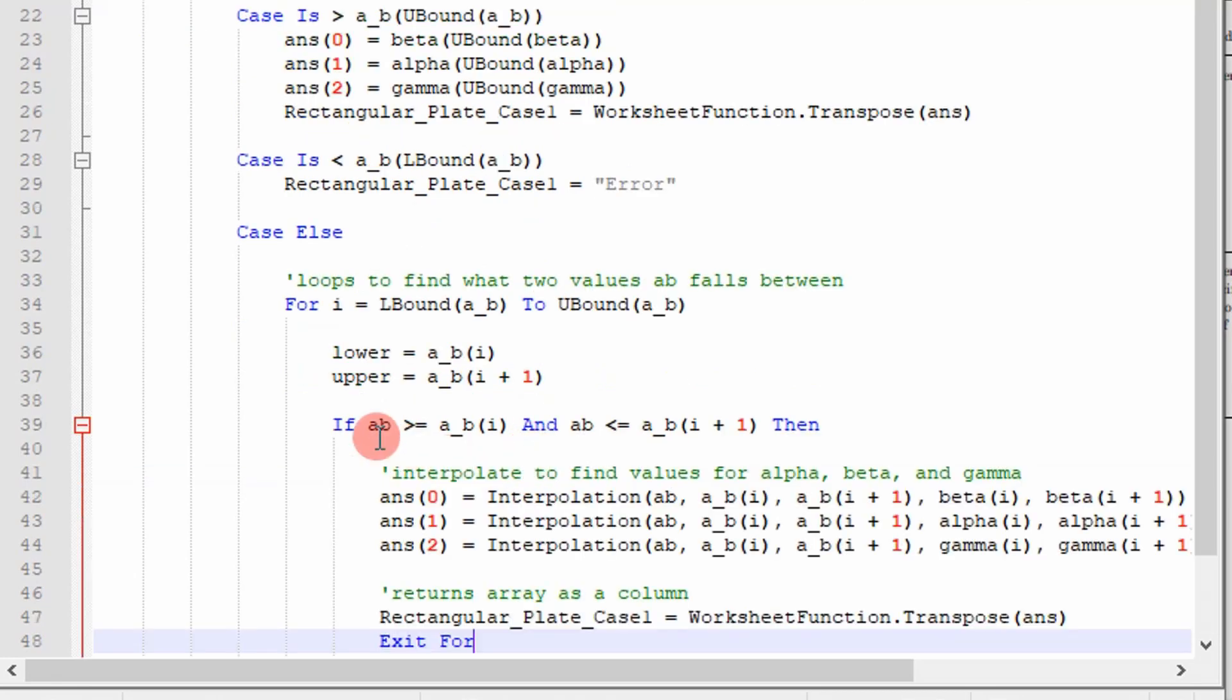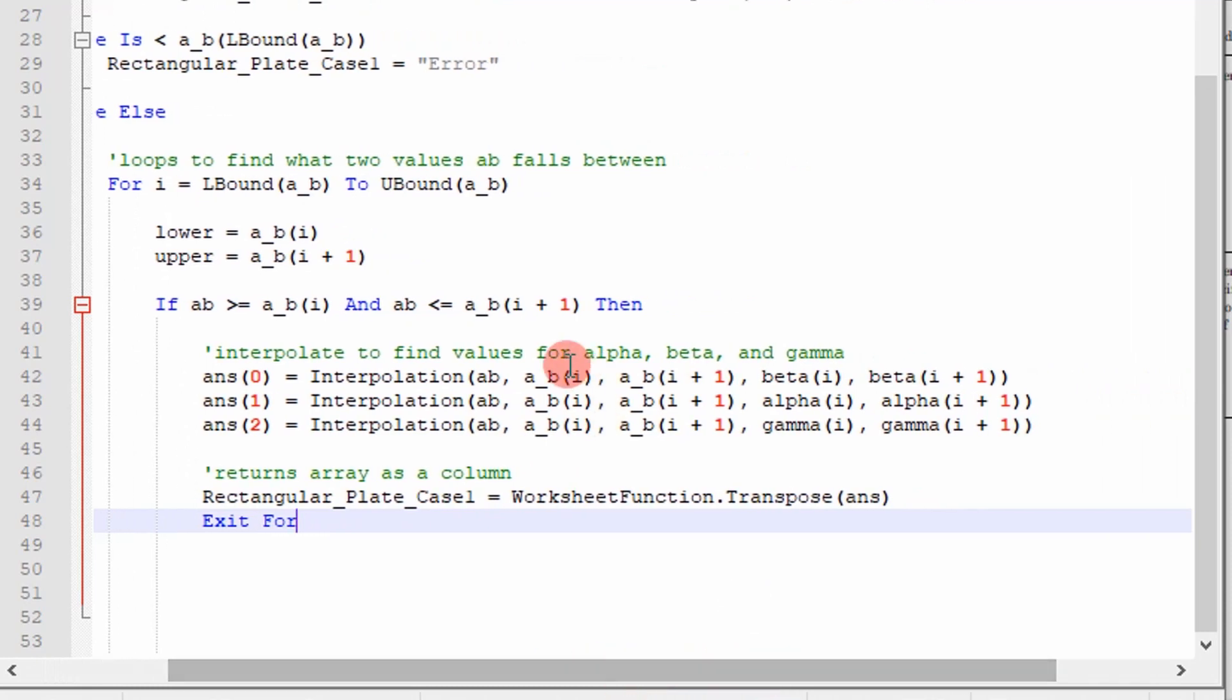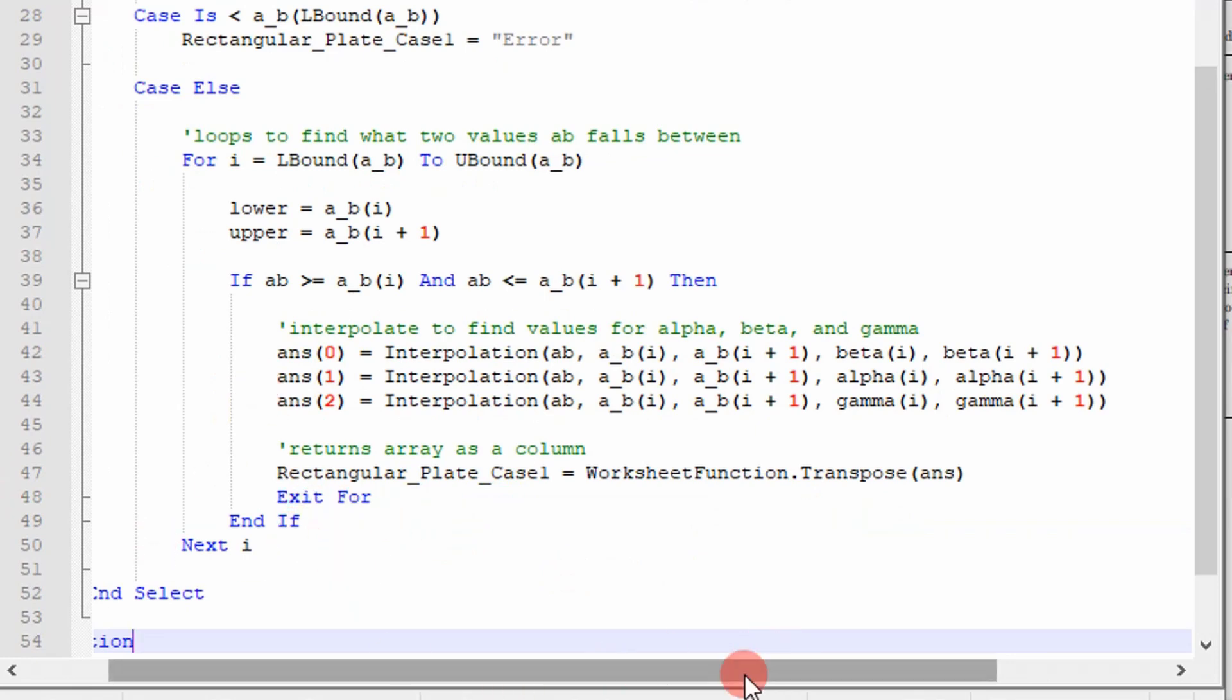And so if my a divided by b falls between those two values, then I'm going to linearly interpolate and return my beta, alpha, and gamma and put those in my answer array list. And then once I'm done, I'm going to return the answer as a column vector. And then I will exit the loop. And I'm pretty much done.